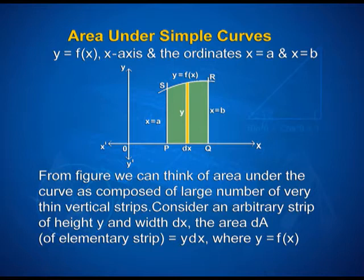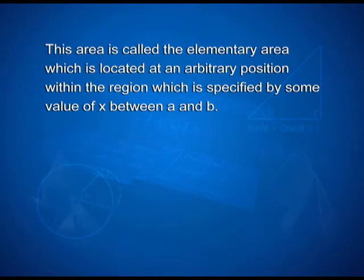Consider an arbitrary strip of height y and width dx. The area dA of the elementary strip is equal to y·dx, where y = f(x). Here we have the x-axis and y-axis, and the curve is given by y = f(x). This is the width of the strip dx and the height is y. x = a is the ordinate and x = b is another ordinate. This area is called the elementary area which is located at an arbitrary position within the region, specified by some value of x between a and b.